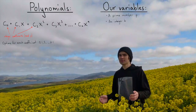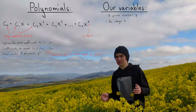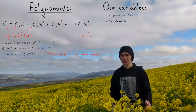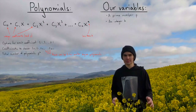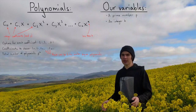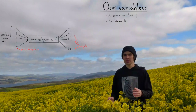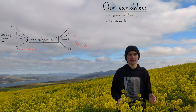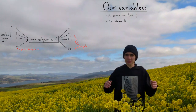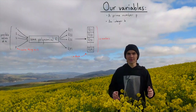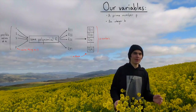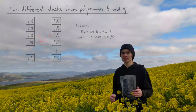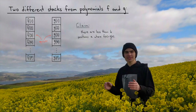That way, we only have K coefficients to choose. Since there are P options for each coefficient, there are a total of P^K polynomials. Now, for each polynomial, let's plug in all possible values of X. Since we're working mod P, there are only P values we can plug in — the numbers 0 through P−1. Let's plug them all in and put the numbers in a stack. Let's do this for all P^K of our polynomials, giving us P^K stacks. Let's look at two different stacks from two different polynomials F and G. I claim that they match in less than K spots.